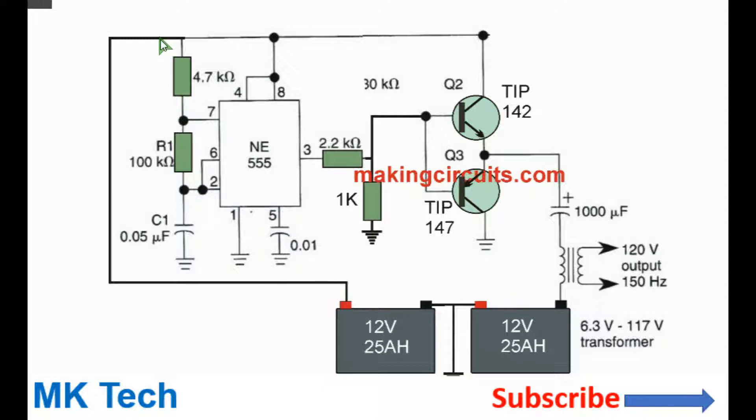Basically when this capacitor is charging, when it charges from the VCC to here, the output is high. When the voltage of this capacitor gets to two-thirds VCC, the internal BJT will be switched on.